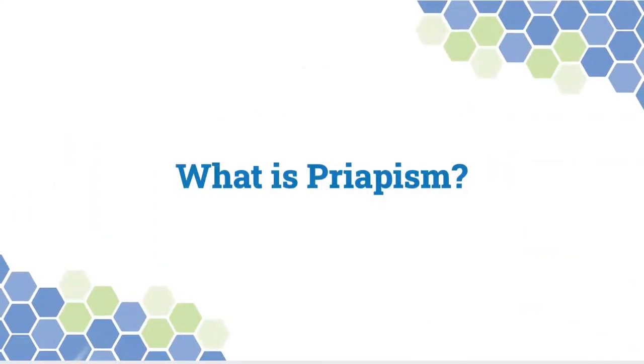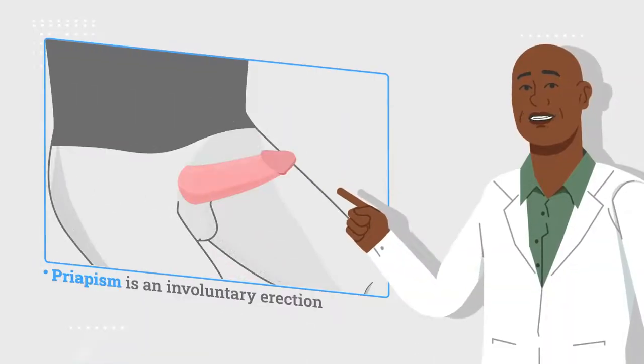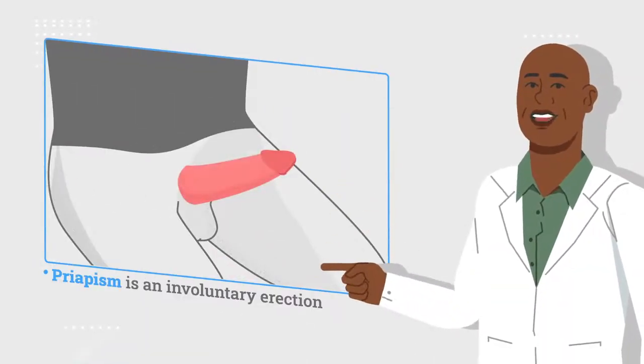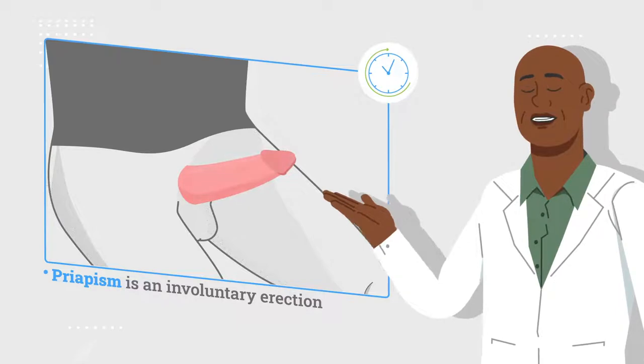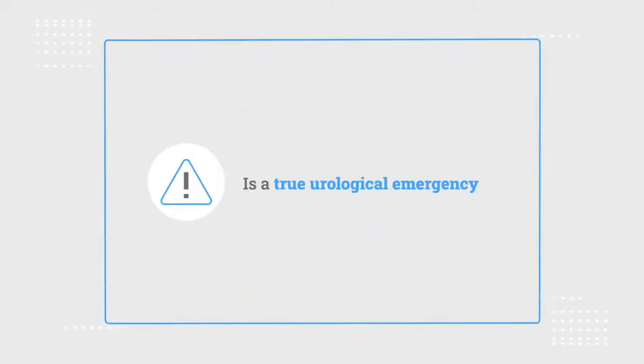You may wonder, what is priapism? Priapism is an involuntary erection which lasts more than 4 hours and is unrelieved by ejaculation. This condition is a true urological emergency.